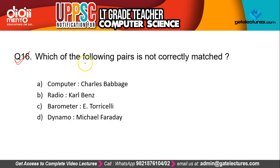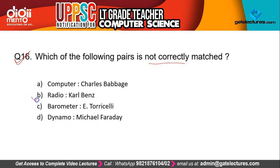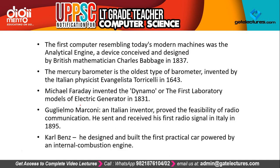Question 16 asks: which of the following pairs is not correctly matched? Inventions and their inventors are given. The correct answer is B — radio and Carl Benz. Carl Benz was not the inventor of radio; the inventor of radio was Marconi.